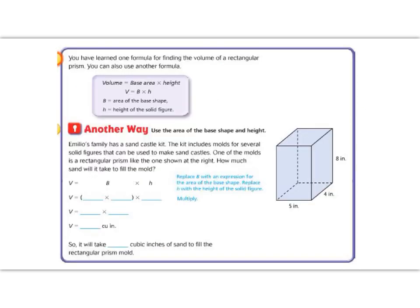Another way to find the volume of a rectangular prism is to find the area of the base, and then multiply by the height. Let's try that this time. Emilio's family has a sandcastle kit. The kit includes molds for several solid figures that can be used to make sandcastles. One of the molds is a rectangular prism shown to the right. How much sand will it take to fill the mold?